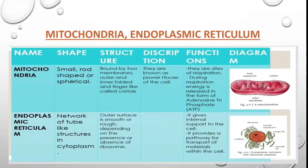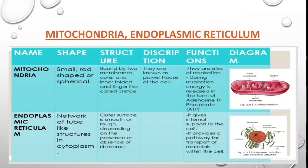The next cell organelle is endoplasmic reticulum. Its shape is a network of tube-like structures in the cytoplasm — they are web-like structures forming a network attached to one another, and they surround the nucleus, as you can see very easily in the diagram.